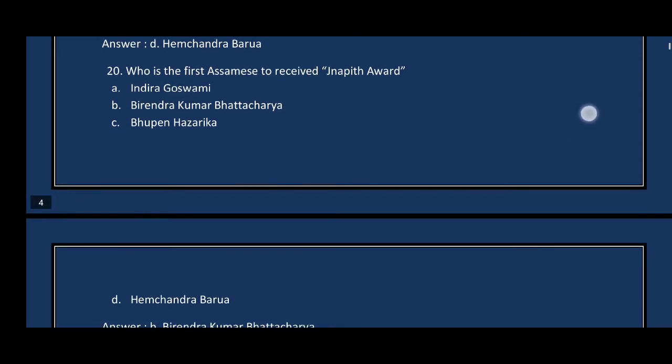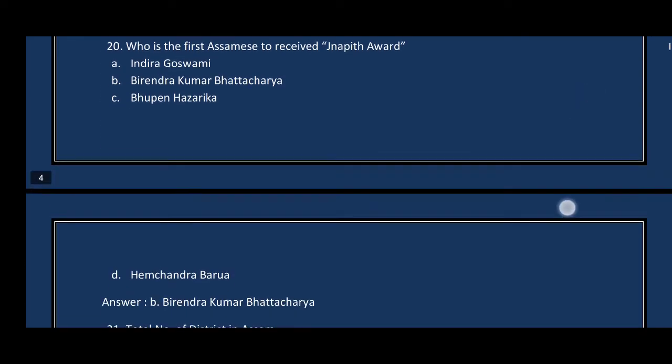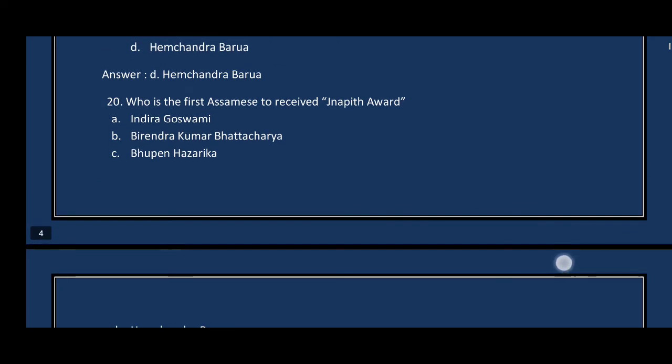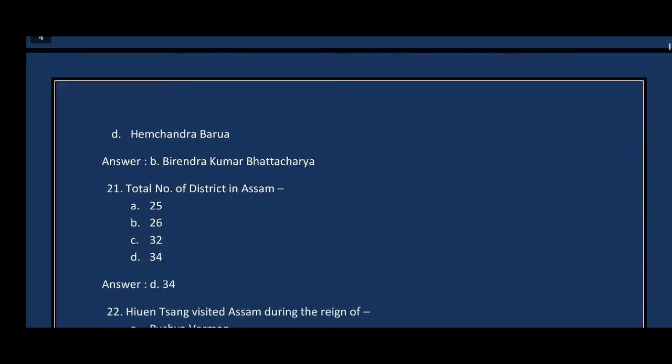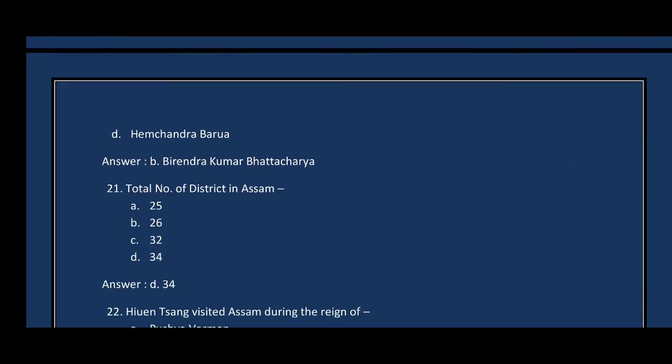The correct answer for question number eighteen is option B — Birendra Kumar Bhattacharji. Question number twenty-one: Total number of districts in Assam — the correct answer is option D, 34.